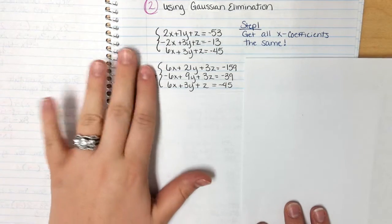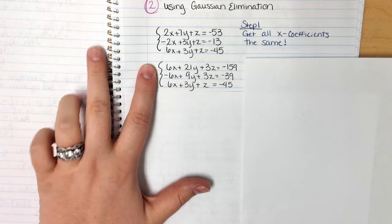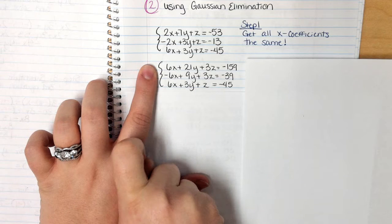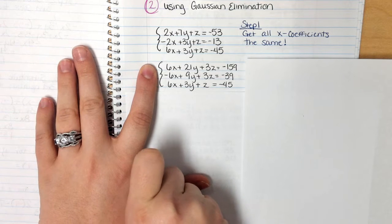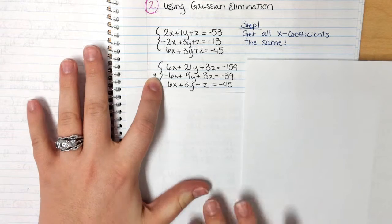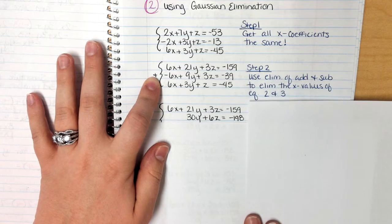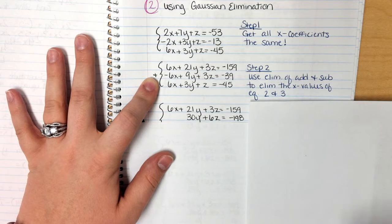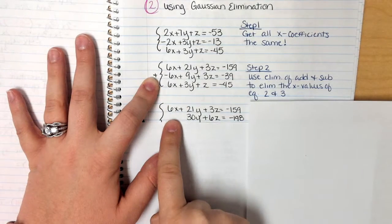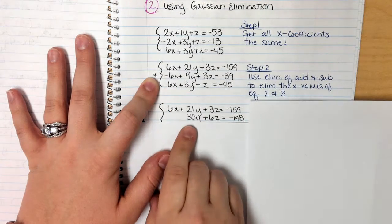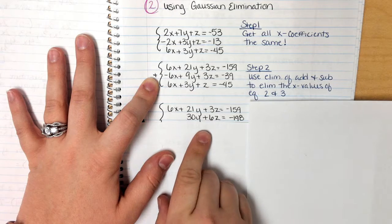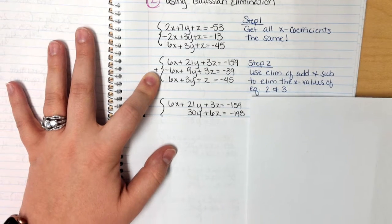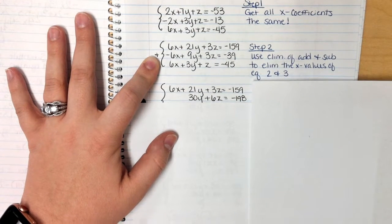Now I must figure out whether to add or subtract the two equations to get zero. Is it 6 plus negative 6 equals 0, or 6 minus negative 6 equals 0? Since 6 minus negative 6 gives 12, I definitely want to add the two together. When I add, the first row stays exactly the same. For the new second row: 6 plus negative 6 gives 0, 21 plus 9 gives 30, 3 plus 3 gives 6, and negative 159 plus negative 39 gives negative 198.